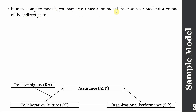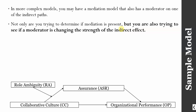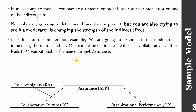In a more complex model, you may have a mediation model that also has a moderator on one of the indirect effects or indirect paths. We have a mediation model here and this moderator is moderating this path here. Not only are you trying to determine if mediation is present — whether assurance mediates this relationship — but you are also trying to see if the moderator is changing the strength of the indirect effect, whether this moderator is changing the strength of the impact of CC on OP through ASR.